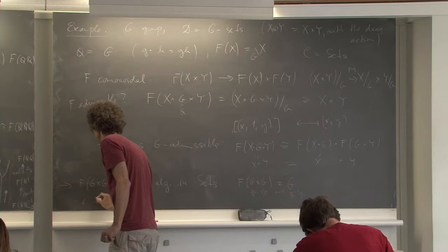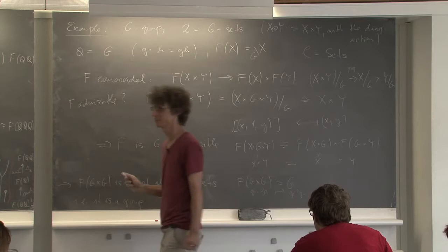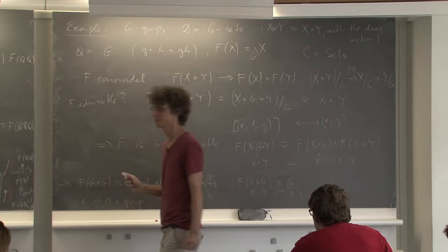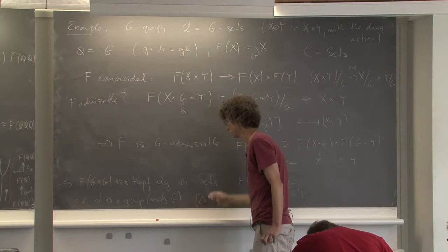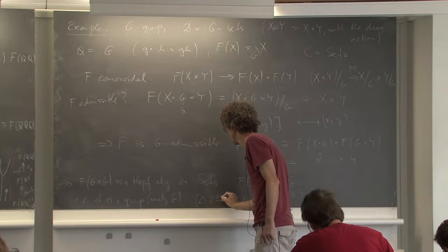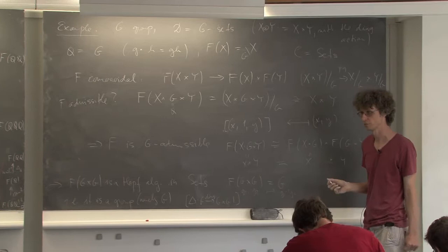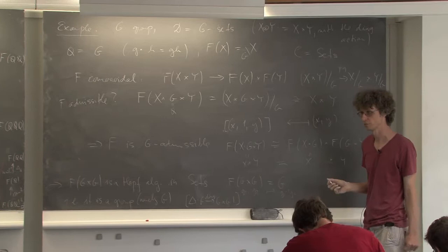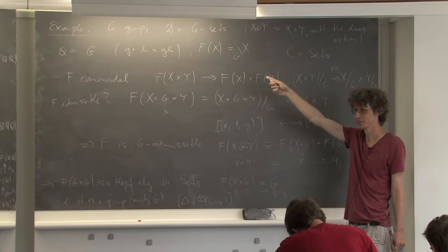So this should imply that F(G times G) is an algebra in Sets. Which algebra is it? Well F(G times G) is simply G, because this identification where you have (g1, g2) sends it to g1-inverse g2. This just repeats basically the motivation for why we were ever talking about this stuff. It is a group — namely the group G itself. The co-product for anything in sets is always just the diagonal map. So the interesting part is only the product, and from here you get the product in the group itself.